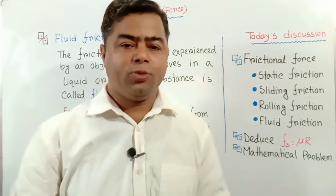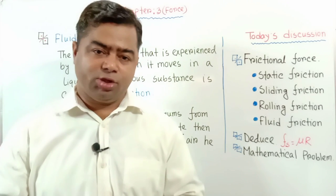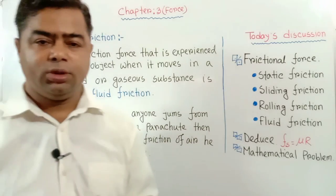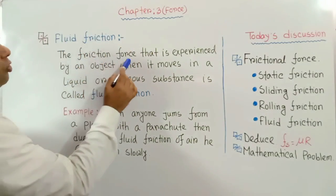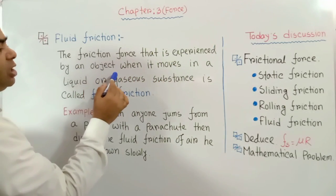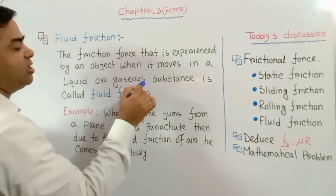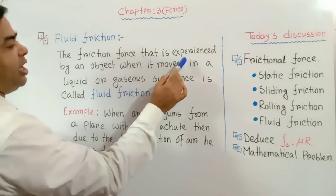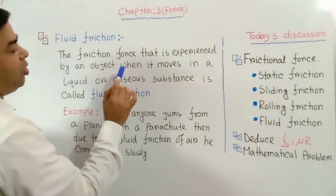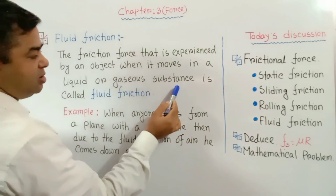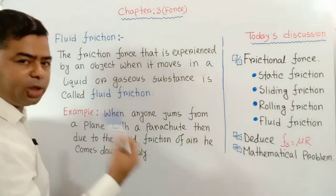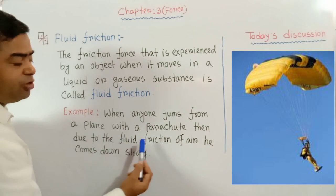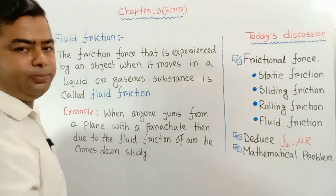Now we discuss about fluid friction. When someone jumps from a plane with a parachute, they come down slowly — that happens due to fluid friction. The frictional force experienced by an object when it moves in a liquid or gaseous substance is called fluid friction. For example, when anyone jumps from a plane with a parachute, due to the fluid friction of air, they come down slowly.